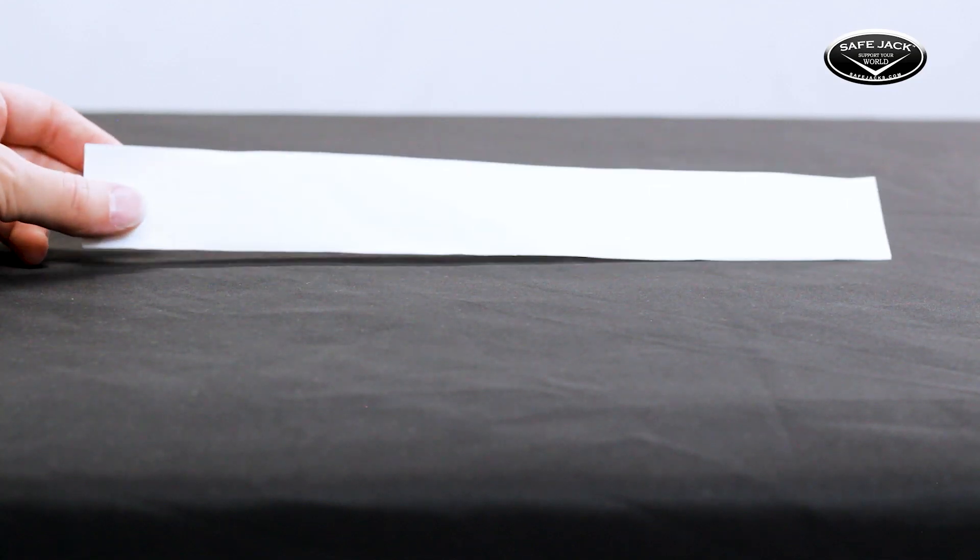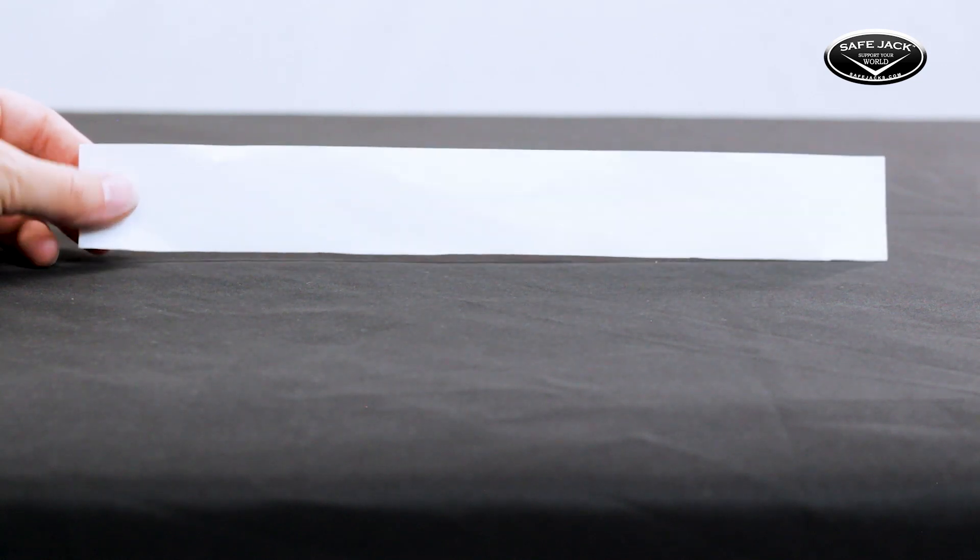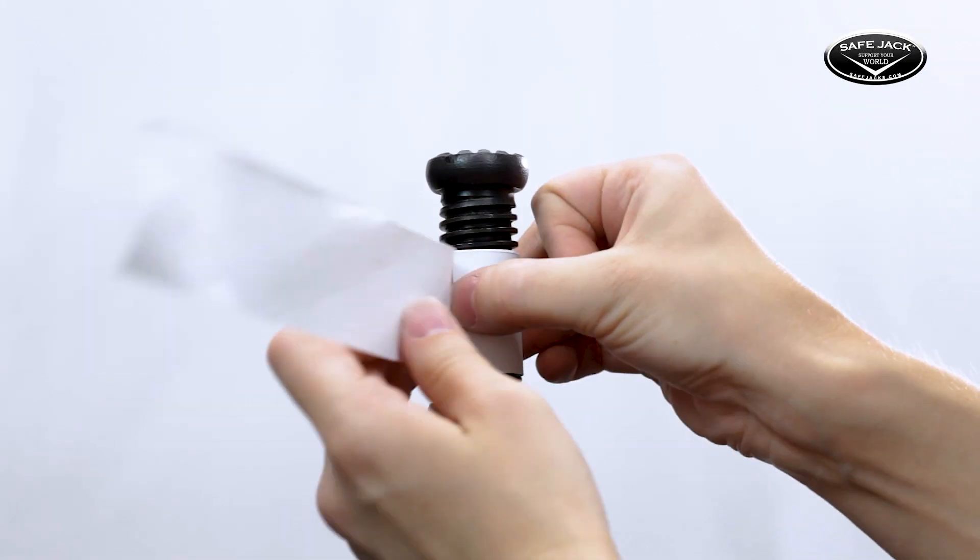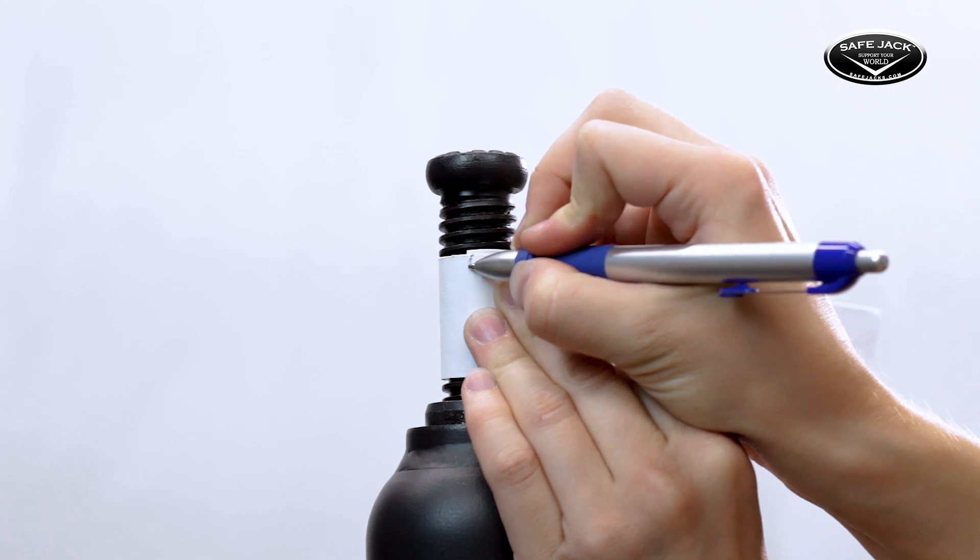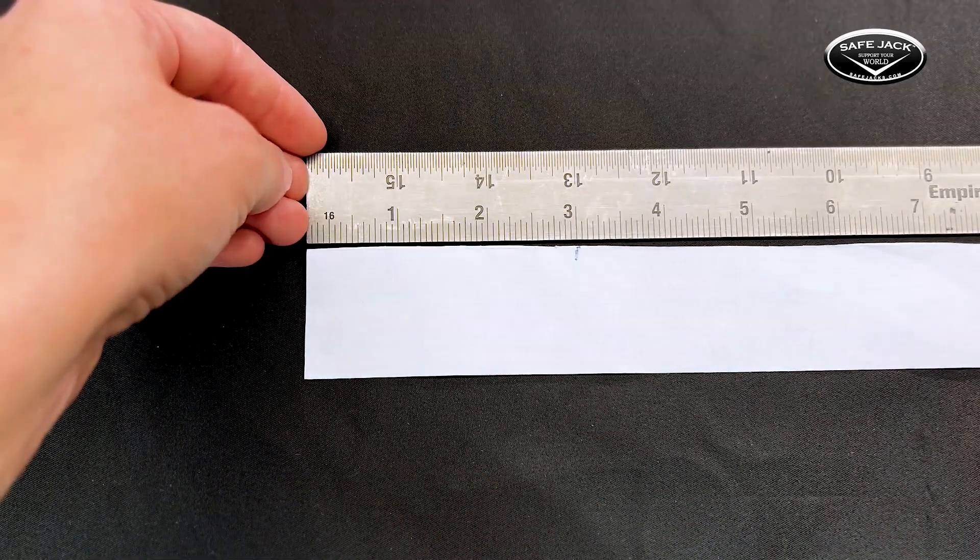If not, get a piece of paper and cut it into a strip. Wrap the strip around the extension screw and mark the spot where the paper overlaps. Using a ruler, measure the end of the paper to the line you marked.